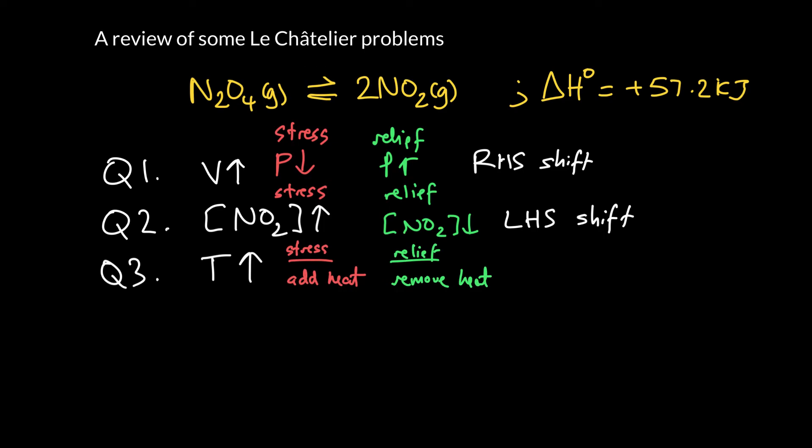We can look at our delta H of reaction. It's an endothermic reaction—heat is being taken in. 57.2 kilojoules is being taken in for every mole of N2O4. We can write heat on the left-hand side as if it's a reactant. That's what endothermic means.